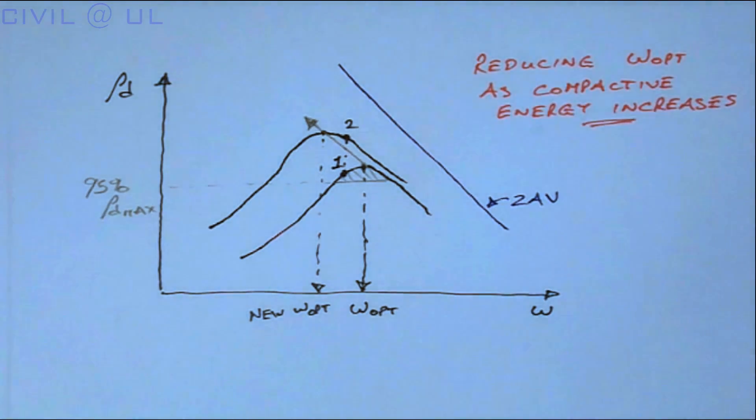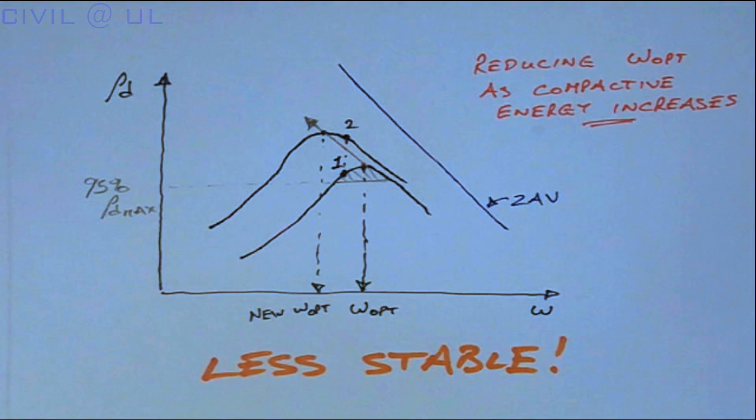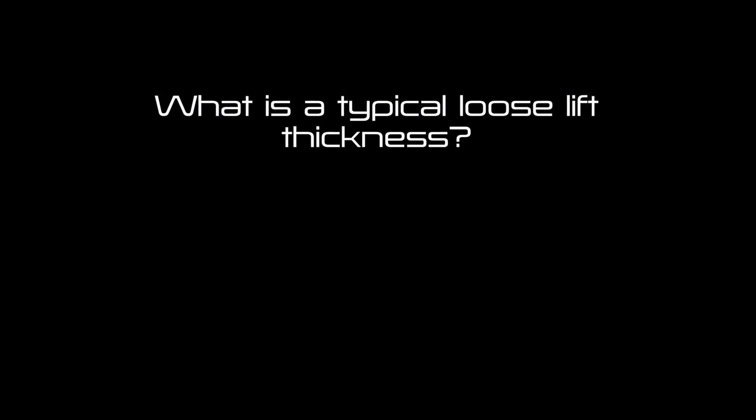Soils compacted on the wet side of the optimum moisture content are less stable, thus leading us to the conclusion that compaction should cease when the specified dry density is achieved.